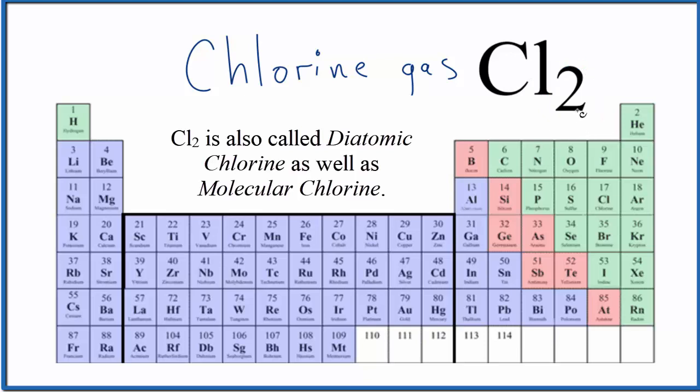The other is molecular chlorine. We have these two chlorine atoms bonded together, and that makes a chlorine molecule. So sometimes it's also called molecular chlorine, but most commonly, the name for Cl2 is chlorine gas.